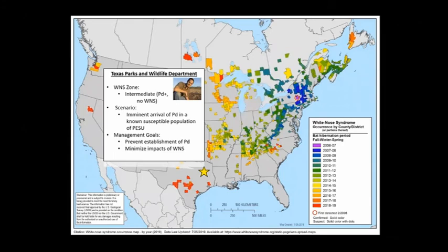We worked with Jonah Evans from Texas Parks and Wildlife Department, who is in the intermediate zone — PD positive but no white-nose syndrome detected at the time of our study. The scenario involved one susceptible population of tri-colored bats in eastern Texas. His management goals were to prevent establishment of PD at those sites while also minimizing the impacts of white-nose syndrome if PD does become identified.